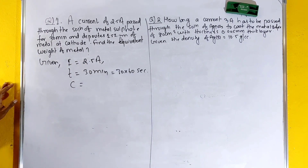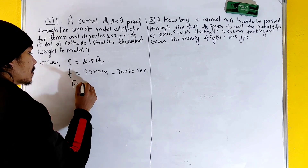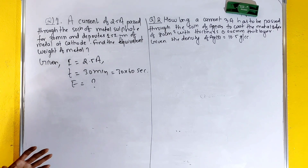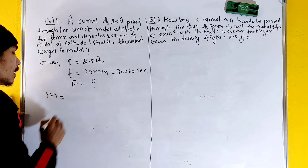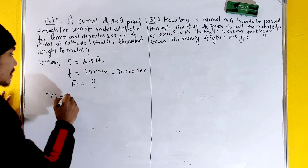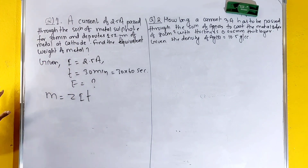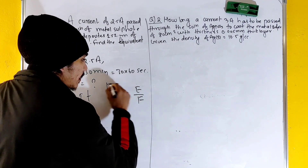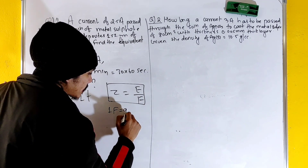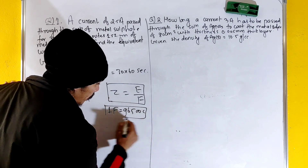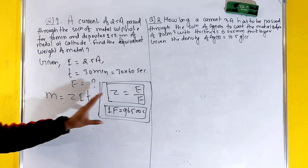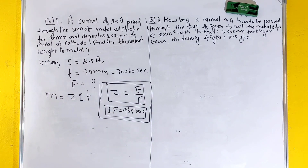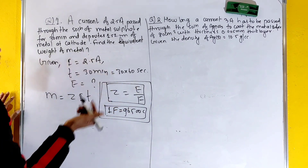The formula is: m is equal to z times i times t. That means z is equal to e divided by F, where F is equal to 96500 coulombs. So we use this relation to find the equivalent weight e.